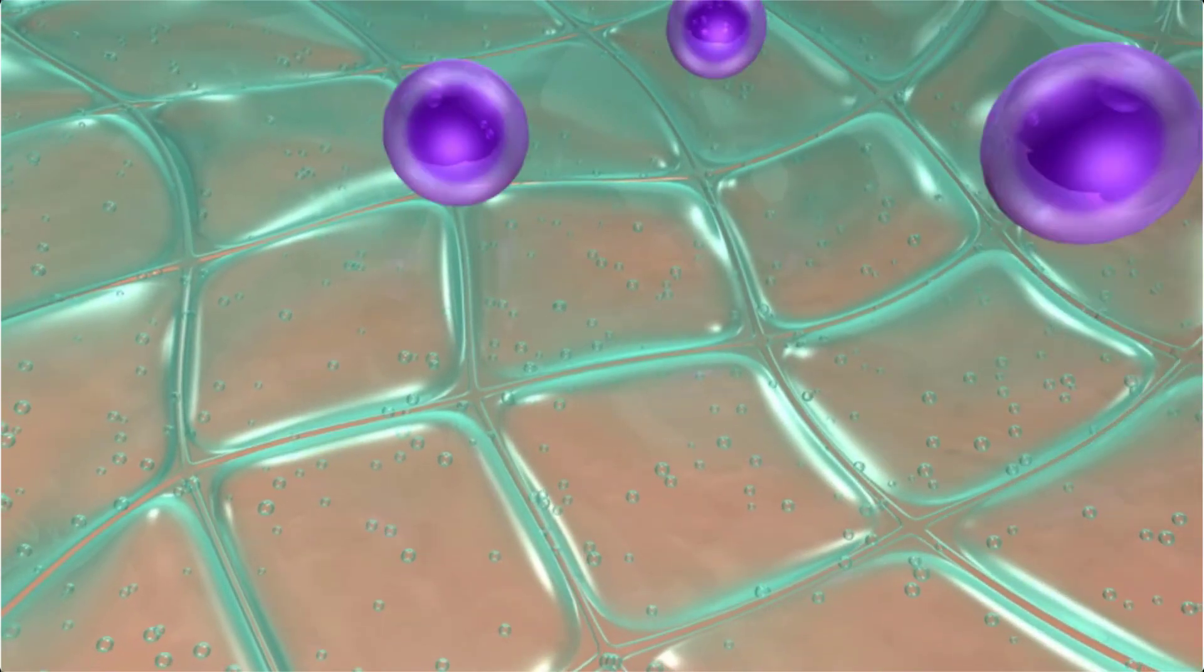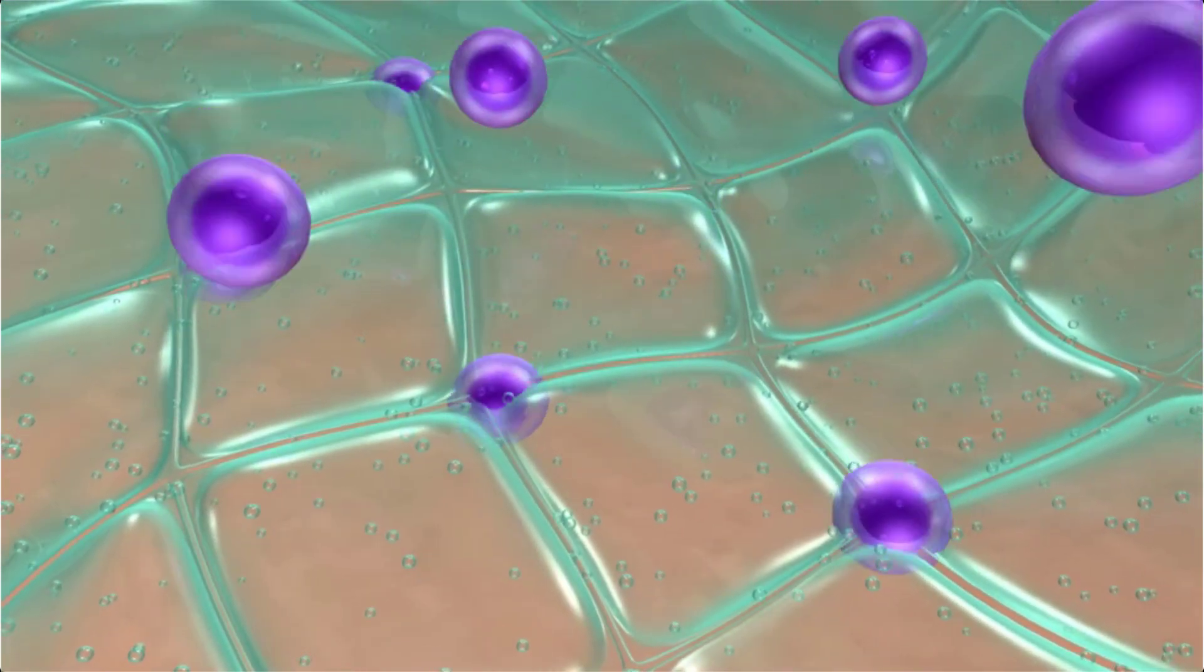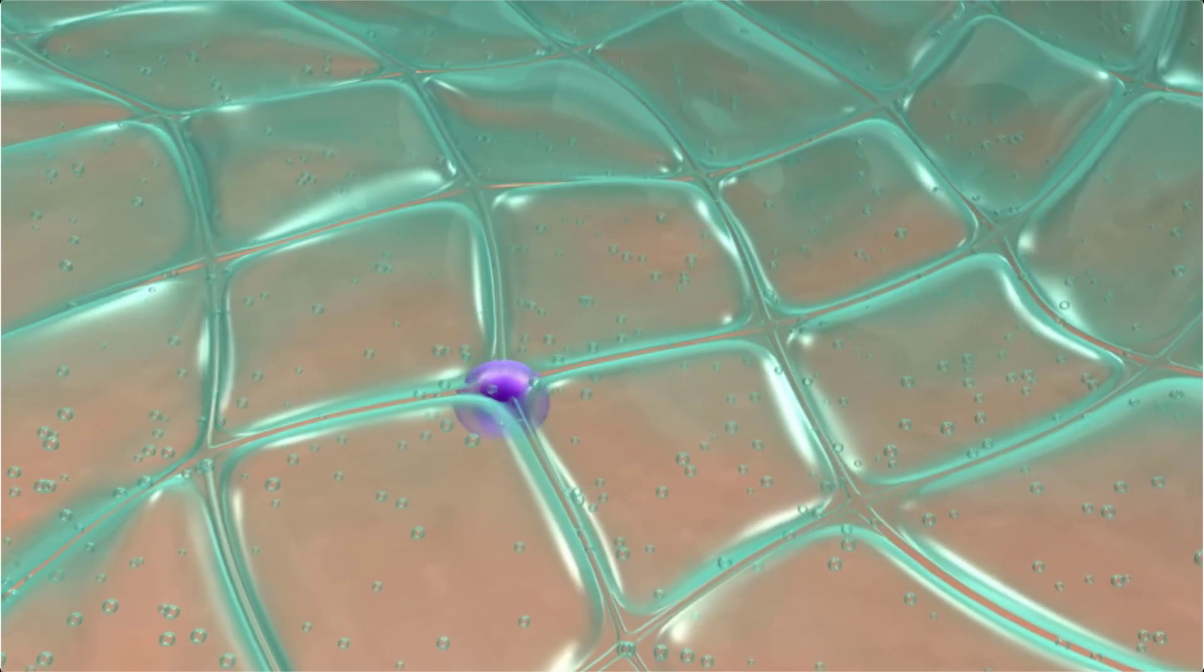Osmosis is limited to only one liquid medium, water, whereas diffusion occurs in liquids other than water, gases, and even solids. Osmosis requires a semi-permeable membrane, whereas diffusion does not require a semi-permeable membrane.